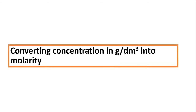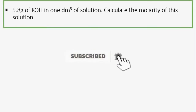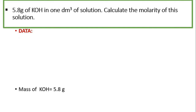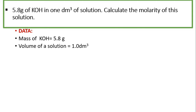An important part of molarity numericals is converting concentration in gram per dm³ into molarity. For example: 5.8 grams of KOH in one dm³ of solution — calculate the molarity of this solution.